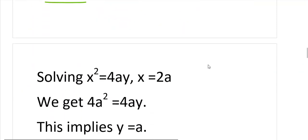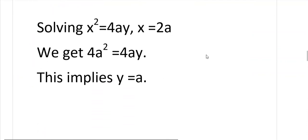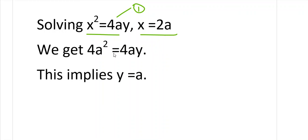Now we will solve the two curves x squared equals 4ay and x equals 2a to find the point of intersection. Substituting x equals 2a into the first equation: (2a)² equals 4ay, that is 4a² equals 4ay. Cancelling 4a from both sides, we get y equals a. So when x equals 2a, y becomes a, and the point of intersection is (2a, a).